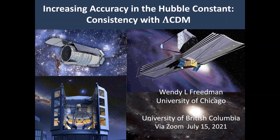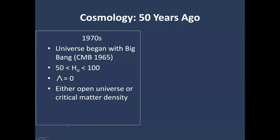I want to step back and give a bit of introduction to how we measure the Hubble constant and historically what some of the challenges have been. If we think about where we were in cosmology 50 years ago, it was a very different picture. We knew the universe began with a big bang, the CMB had been discovered in 1965, and we were looking at a factor of two uncertainty in the Hubble constant. That debate went on for more than a couple of decades — a very unsatisfactory situation.